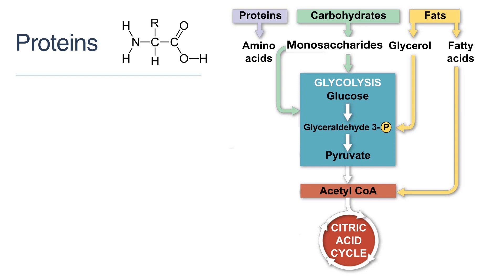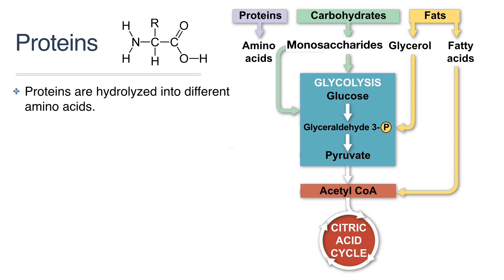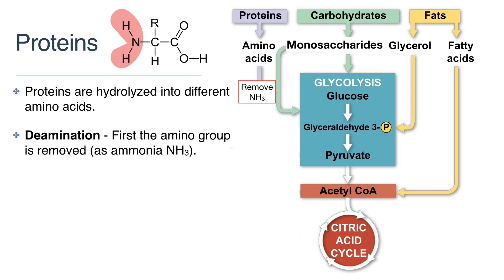Finally, let's look at proteins. Since there are 20 different amino acids that can be used to make up proteins, the catabolism of proteins will produce a variety of different amino acids. The first thing that must happen to each amino acid prior to entering cellular respiration is the removal of the nitrogen-containing amino group. This process is called deamination, and it is essential because the molecules involved in cellular respiration do not contain amino groups.